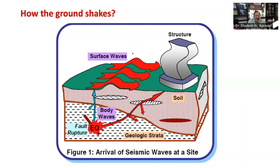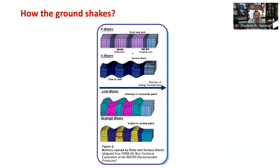These seismic waves travel in all directions through earth layers, reflecting at each interface. When these seismic waves travel through the body of the earth, they are called body waves. And when they come at the surface, they are known as surface waves. Body waves are of two types as shown in this figure: P waves, which are primary waves, and S waves, which are secondary waves.